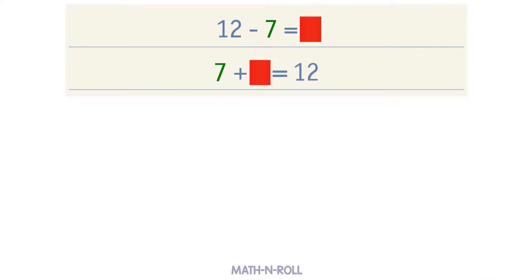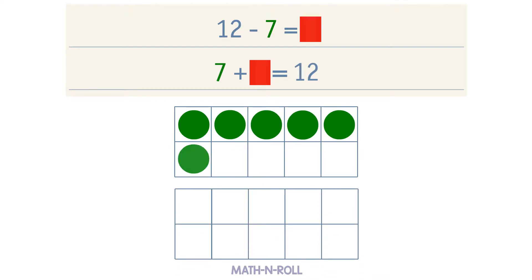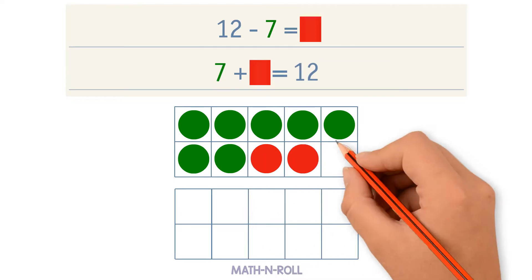We are going to use the make a 10 strategy. Take a look at the model. We have 7 circles. We need to count up to 12, but first we're going to make a 10. Add the red circles to fill the 10 frame: 8, 9, 10.